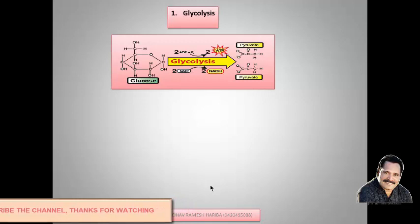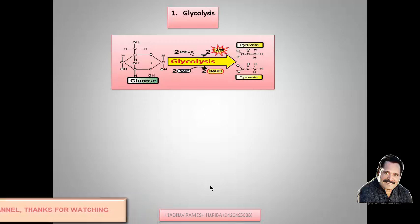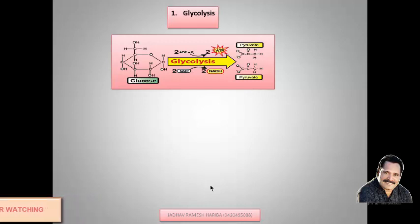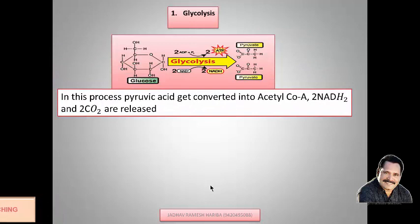The glycolysis process is the same in both types of respiration — aerobic and anaerobic. In both types, glycolysis is the same process. From glycolysis, we obtain two molecules of pyruvic acid, two molecules of ATP, two molecules of NADH₂, and two molecules of water. The pyruvic acid then gets converted into acetyl coenzyme A, releasing two NADH₂ and two carbon dioxide molecules.